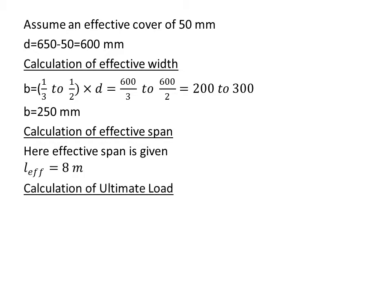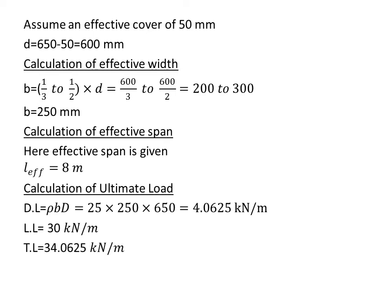Now we calculate effective span, but effective span is directly given to us, so L effective equals 8 m. Now we calculate the ultimate load. First we calculate the self weight: ρBD that is dead load, then we get 4.0625 kN/m. Live load is given, total load is the sum of these two, that is 34.0625 kN/m. We multiply total load with factor of safety 1.5 and we get Wu equals 51.093 kN/m.